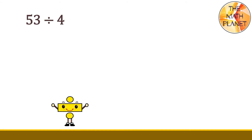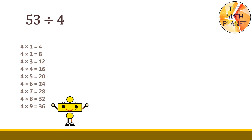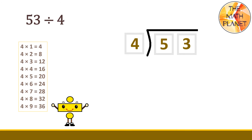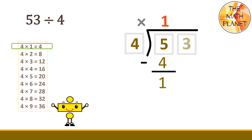Let's take another example: 53 divided by 4. We will recall the multiplication table of 4 to help us divide faster. Then, we will set up the long division: 53 divided by 4. What is 5 divided by 4? We will use the first multiplication rule. So, 5 divided by 4 equals 1. Then, we will multiply: 1 times 4 equals 4. Then, subtract: 5 minus 4 equals 1. Since the remainder 1 is less than the divisor, which is 4, it's okay.